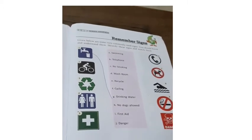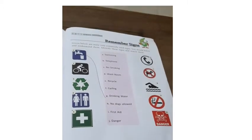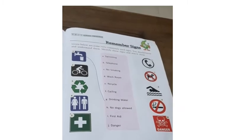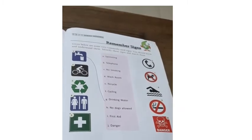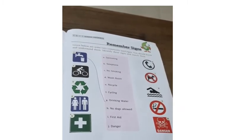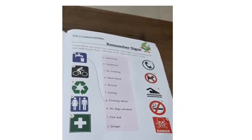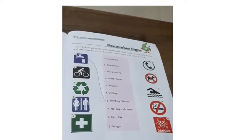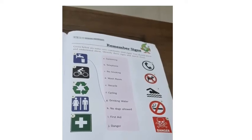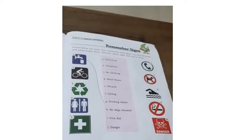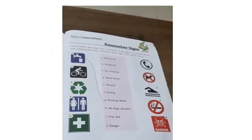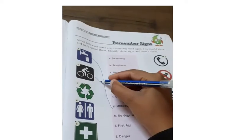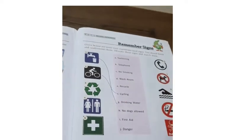Now number 2. The symbol for number 2 is cycling. There is a person who is riding a bicycle — that is the symbol for cycling. So number 2 will be matched to cycling, from here to here.